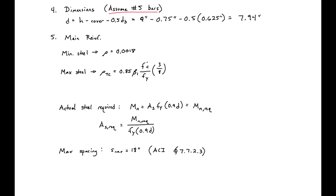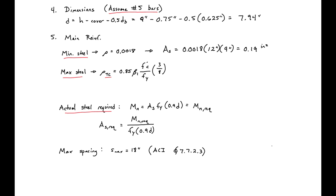We'll next look at the main reinforcement required in our slab. First, we check the minimum steel requirement from ACI based on shrinkage and temperature steel: rho equals 0.0018. Converting to area, AS minimum equals 0.0018 times our base width of 12 inches times our height H of 9 inches, giving us an AS minimum of 0.19 inches squared per foot.